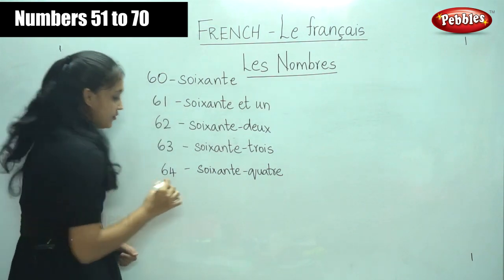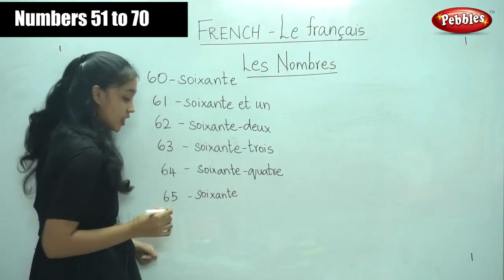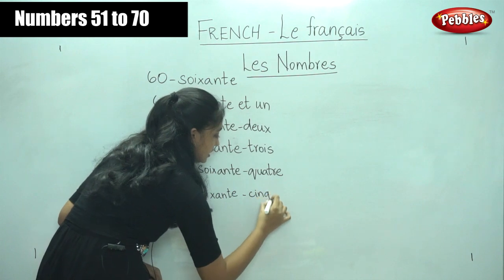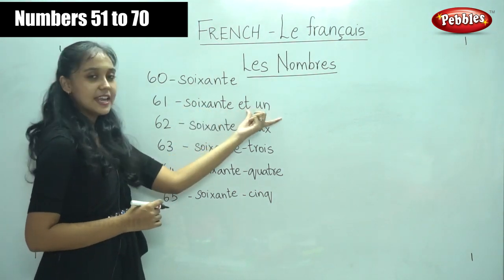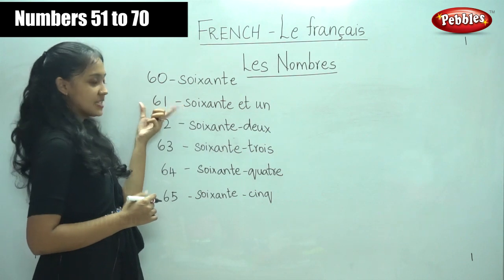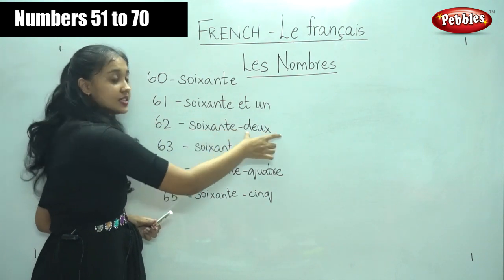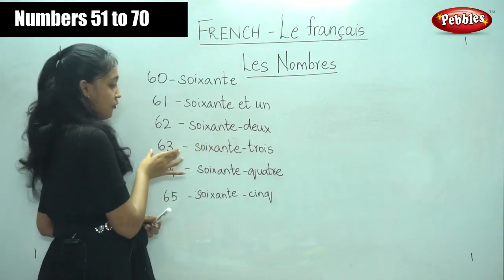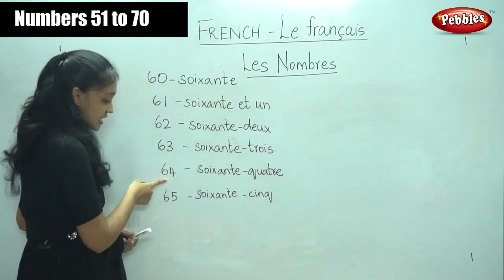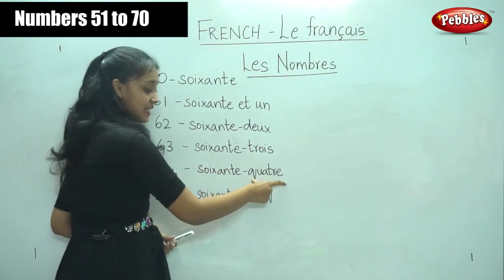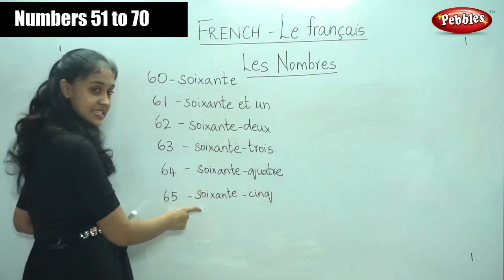For number 65, it is soixante cinq — 60 and 5. So it is very easy. You just have to know the word for number 60 and numbers 1 to 9. So for 61 we say soixante et un, for 62 it is soixante deux, for 63 it is soixante trois, for 64 it is soixante quatre, for 65 it is soixante cinq.